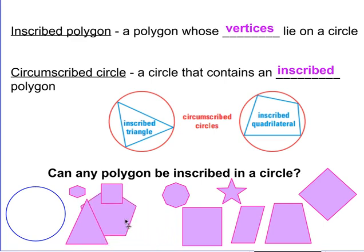How about this five-sided figure? The five-sided figure is called a pentagon. Looks like this pentagon also fits inside of the circle with the vertices on the circumference.